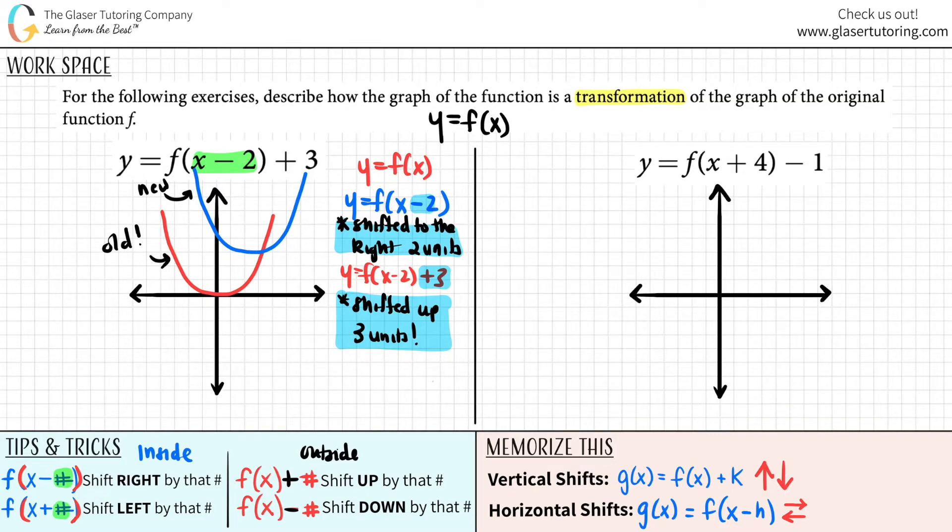We have y equals f of x plus four and then a minus one. So let's see. Y equals f of x plus four. So this is on the inside. This plus four is inside the parentheses. That is a horizontal shift. It's a plus and a plus means shift to the left. So we know that we had to shift to the left four units. That's our first shift. That covers the plus four.